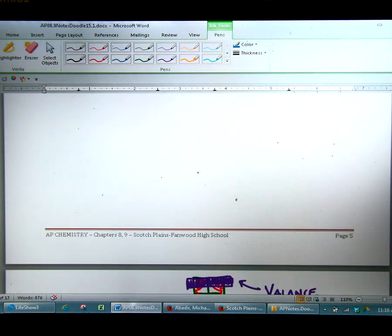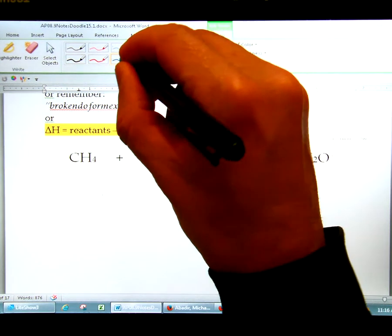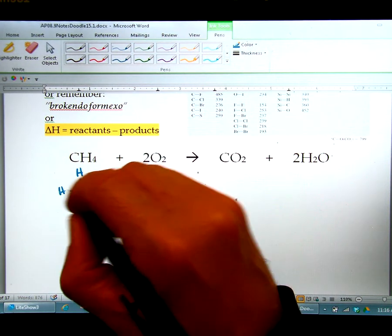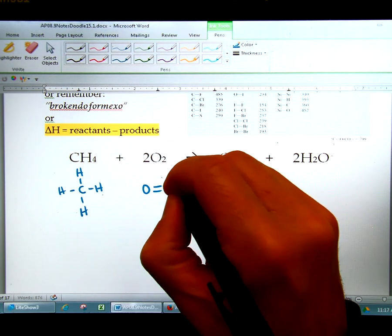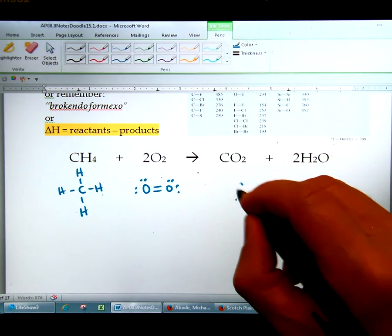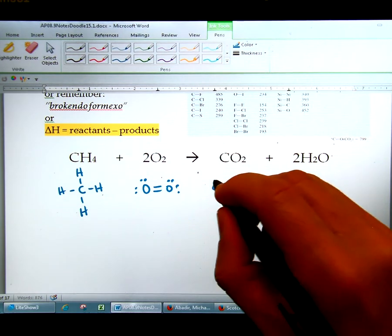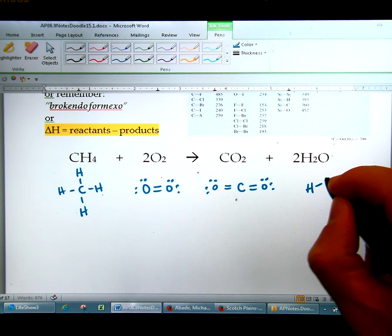So the first thing you need to do is draw the Lewis structure for each of these, which now you're an expert on that. So we'll quickly draw the CH4. Looks like this. Oxygen has a double bond if you take the time to figure that out. Carbon dioxide also has two double bonds, as we saw from our practice earlier. Here. And water, of course, has single bonds with the H and the O.